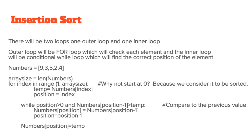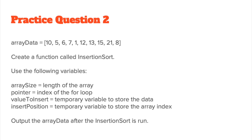Practice question two: array data has a set of values. Create a function called insertion sort using the following variables — array_size for the length of the array, pointer for the index of the for loop, value_to_insert for whatever you're inserting, insert_position, and a temporary variable to store the array index. Output the array data after the insertion sort is run. Pause the video, have a go, and then check a possible solution.